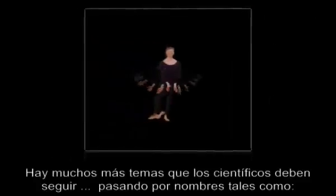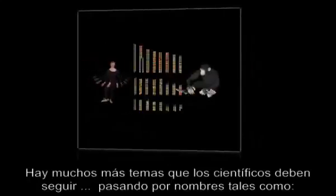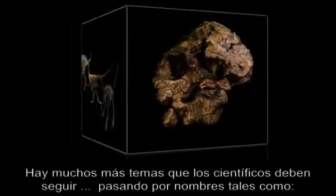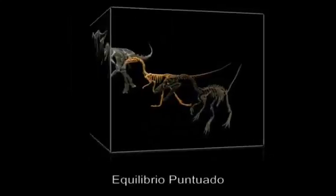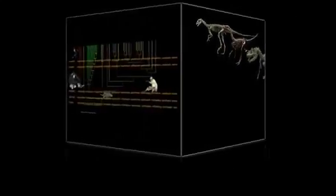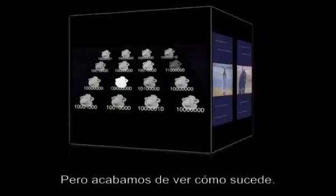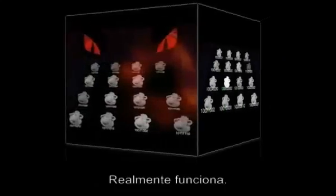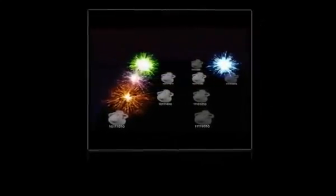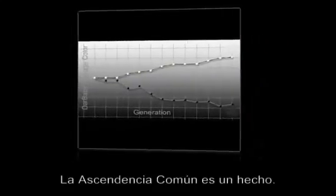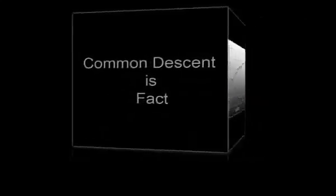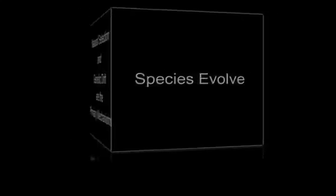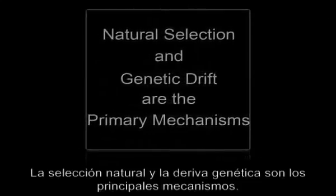There are many more issues that scientists must pursue, going by names such as punctuated equilibrium, bottlenecks, and founder effects. But you have just seen how it happens — it really works. Common descent is a fact. Species evolve. Natural selection and genetic drift are the primary mechanisms.